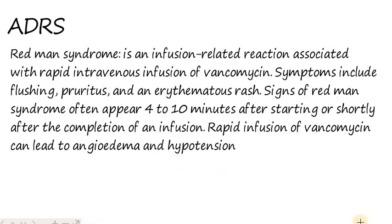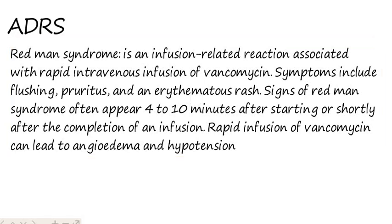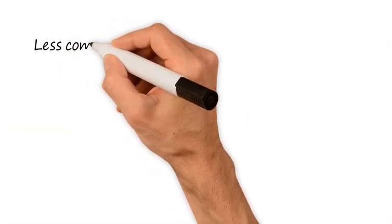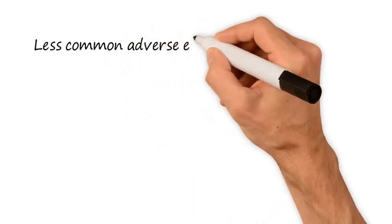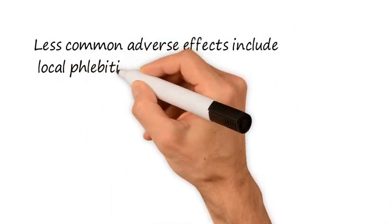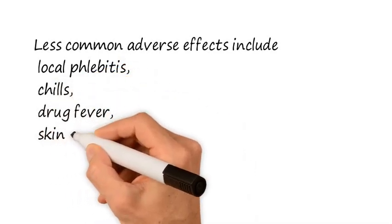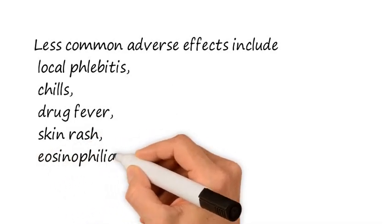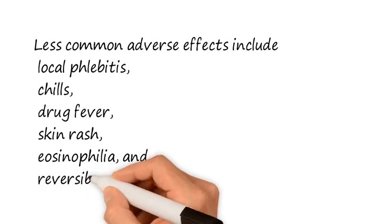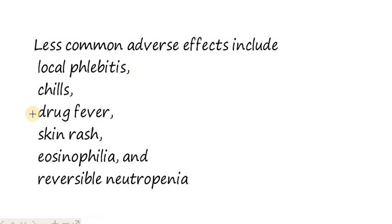The main adverse drug reactions we are having with vancomycin include angioedema and hypotension. Less common adverse drug reactions or adverse effects include local phlebitis, chills, drug fever, skin rash, eosinophilia, and reversible neutropenia. These are the basic terms. I hope this makes sense. Let me explain what is phlebitis, what is eosinophilia, and what is neutropenia.